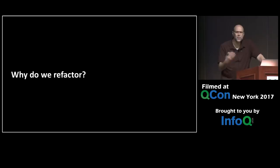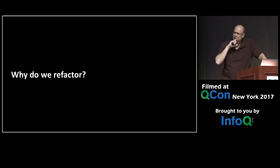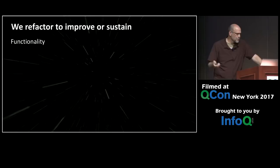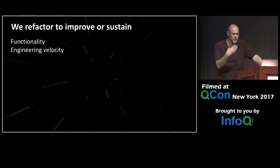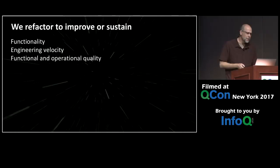Let's talk about the refactoring framework. Why do we refactor code? The audience offered: more efficient code, make things better, remove redundancy, elegance. We refactor to improve or sustain something — typically functionality, engineering velocity, or functional and operational quality. That means quality from a traditional QA perspective, or performance and reliability — those key metrics we care about for our service architectures.